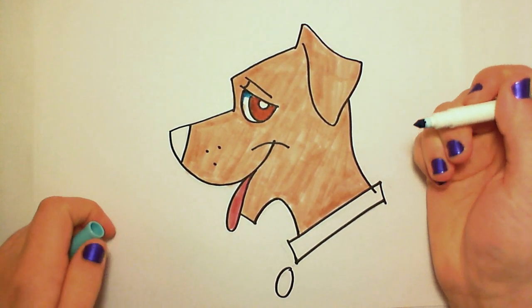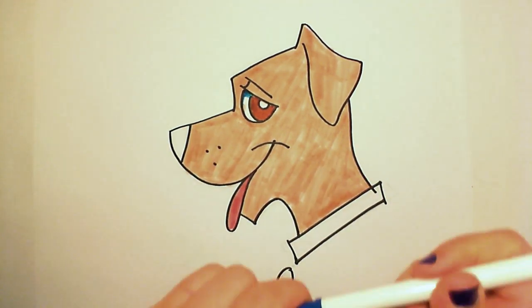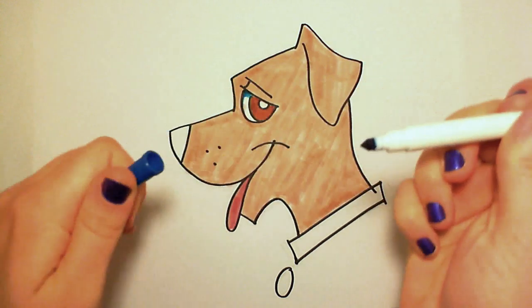This light blue shows the shadow cast by the eyelid onto the eye. And this dark blue is going to be used for the collar.